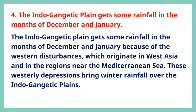Question 4: The Indo-Gangetic plain gets some rainfall in the months of December and January. This is because of western disturbances which originate in West Asia and in the regions near the Mediterranean Sea. These westerly depressions bring winter rainfall over the Indo-Gangetic plains.